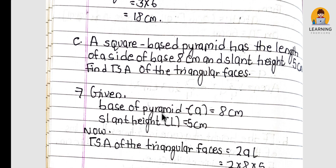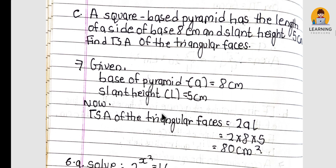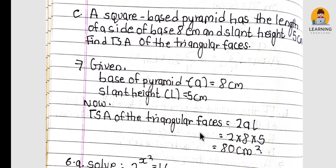A square base pyramid has the length of side of base 8 cm and slant height 5 cm. Find the total surface area of the triangular faces. Total surface area of triangular faces = 2AL = 2 × 8 × 5 = 80 cm². Note: the total surface area of the square base pyramid is A² + 2AL, but the question only asks for the triangular faces.